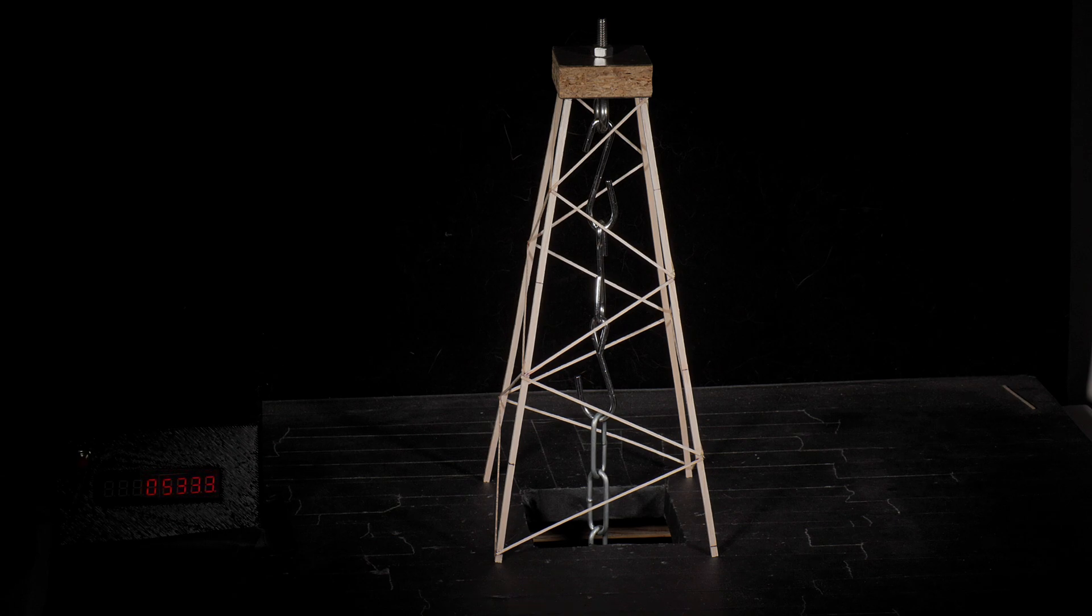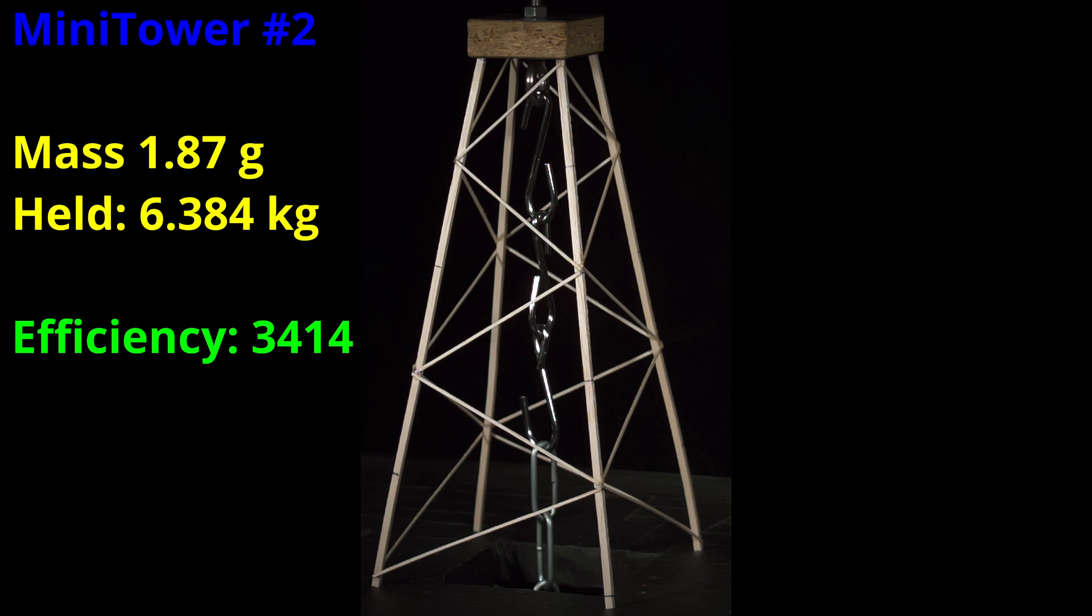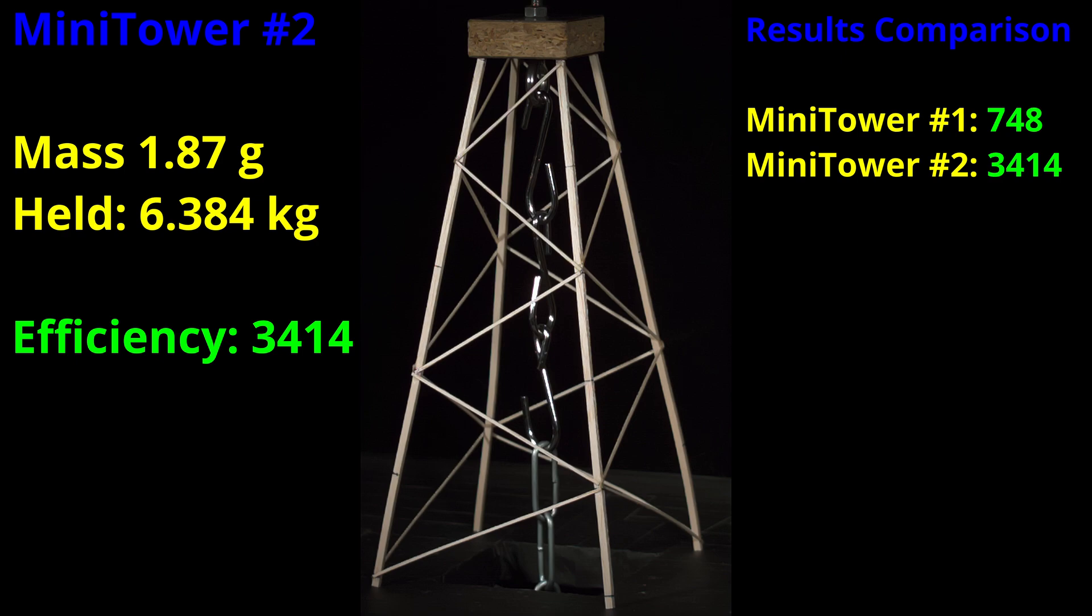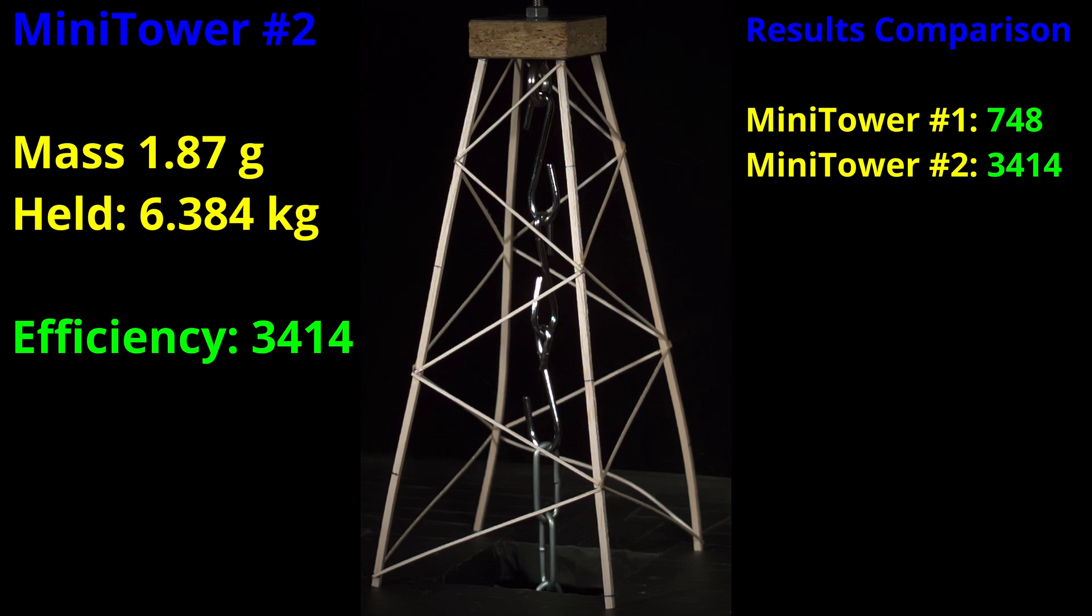We're well into the live testing of this tower and we can already tell it's significantly better than the first design. Okay, that wasn't great, but it was much, much better than the previous design. Let's see if we can tell exactly what happened and how we might improve it for the next one. It held 6.384 kilograms for an efficiency score of 3,414. If you recall, the first tower's efficiency score was only 748. So this very simple design change increased our efficiency by a factor of over four and a half. That's a huge difference.